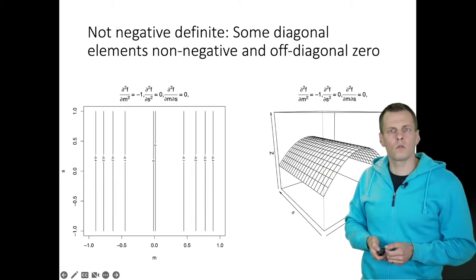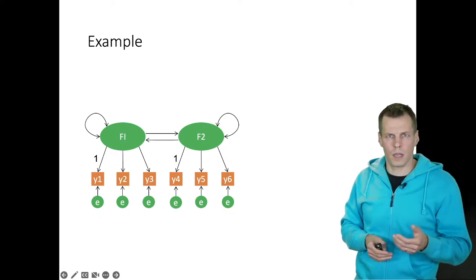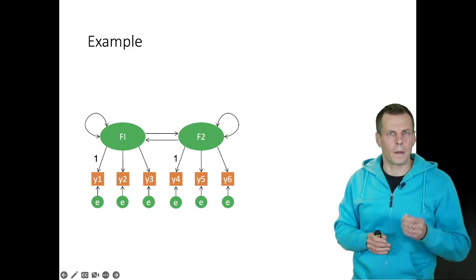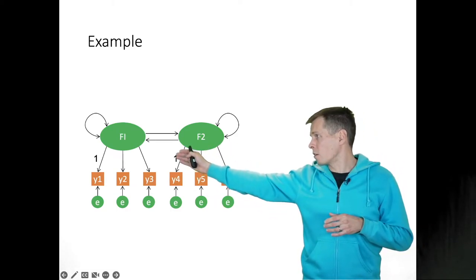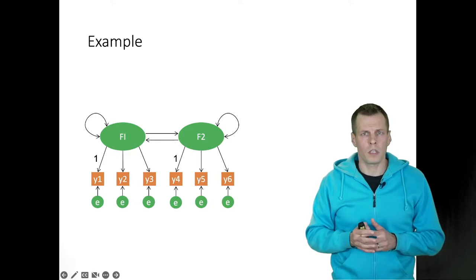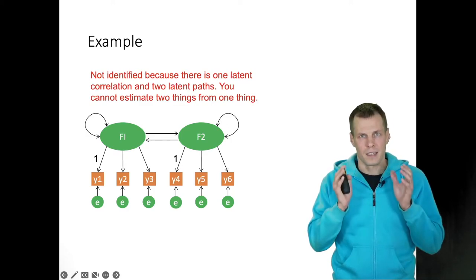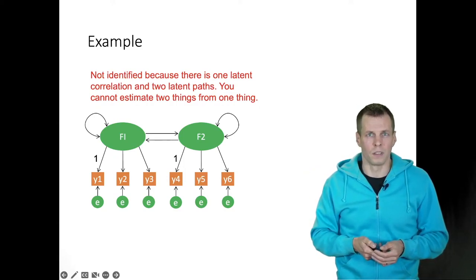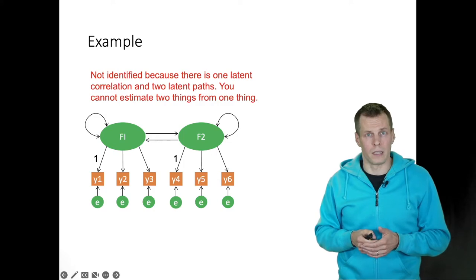Now let's go to a practical example. I'm going to be estimating this model here and then showing how we can use the Hessian matrix to understand why this is not identified. We have these two factors F1 and F2. We estimate a model where F1 is regressed on F2, F2 is regressed on F1, and each factor has three indicators. The degrees of freedom are positive, but this model is not identified because you can't estimate two regression paths from one correlation.